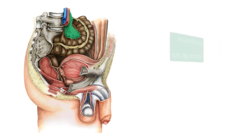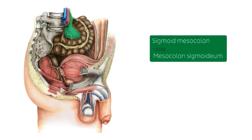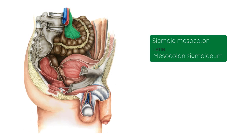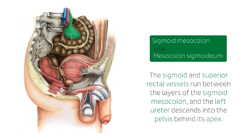The sigmoid mesocolon is a fold of peritoneum that attaches the sigmoid colon to the pelvic wall, and is one of the four mesenteries in the abdominal cavity. The sigmoid and superior rectal vessels run between its layers, and the left ureter descends into the pelvis behind its apex.